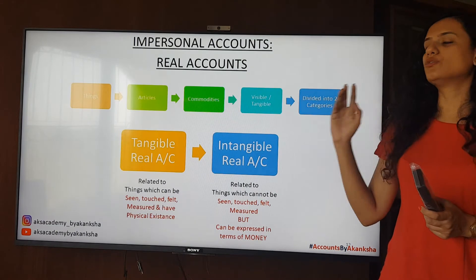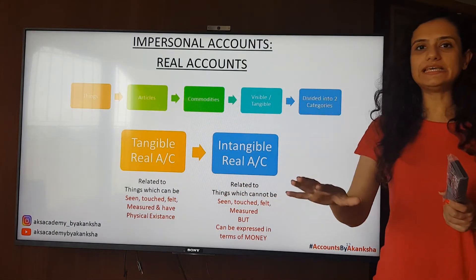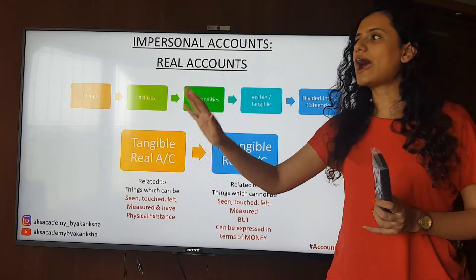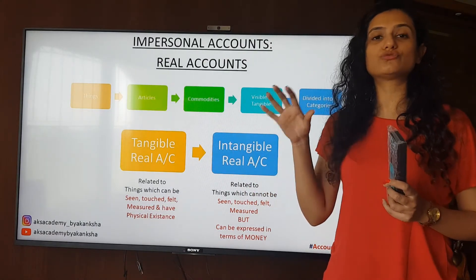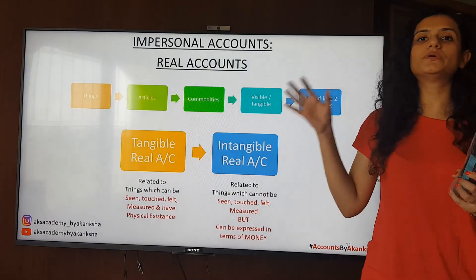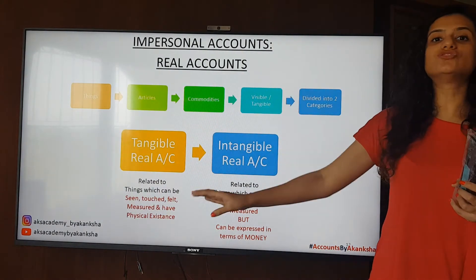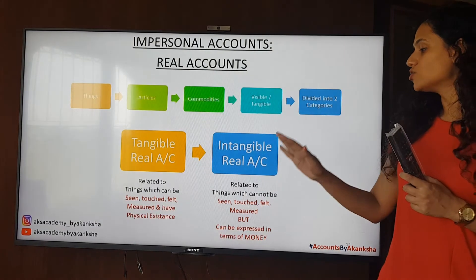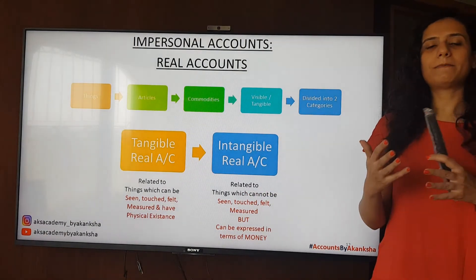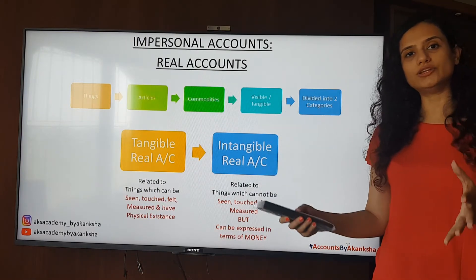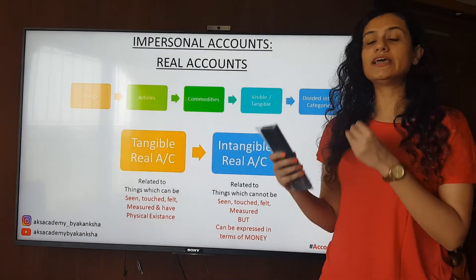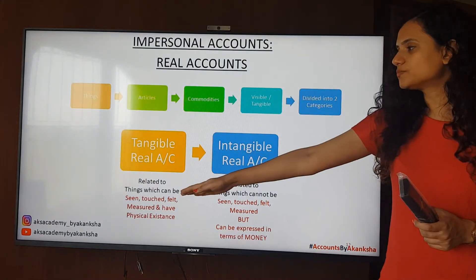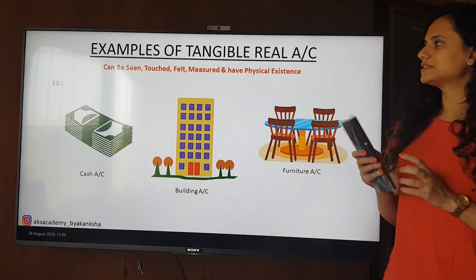When talking about tangible assets, I am referring to things which can be seen, touched, felt, and measured — they have physical existence. Those are going to be the tangible part of real accounts. Then we have intangible real accounts — these are things which cannot be seen, touched, felt, or measured, but we know they do have a monetary value. They may not have a physical existence but they do have a monetary existence.